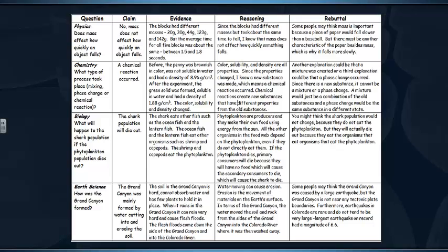So, this is on page five of your handout. This is what it looks like across the different sciences. So, in physics, does mass affect how quickly an object falls? There would be your claim, evidence, and your reasoning. And it also gives a rebuttal. So there's examples in physics, chemistry, biology, and earth sciences.